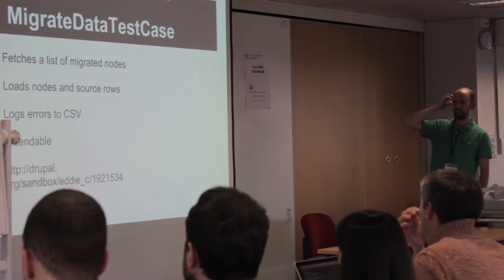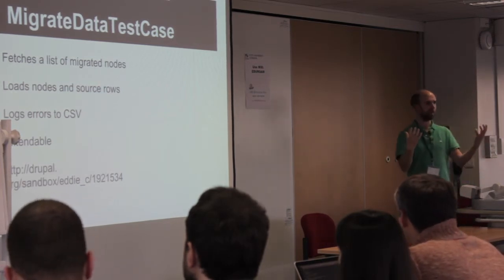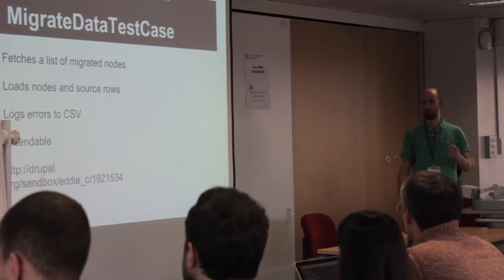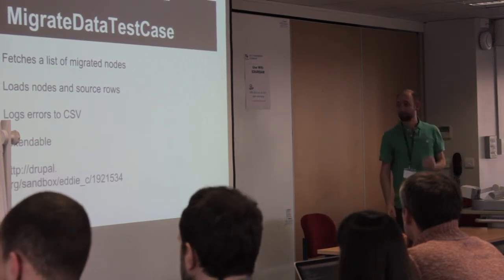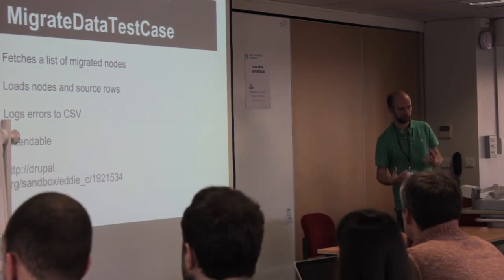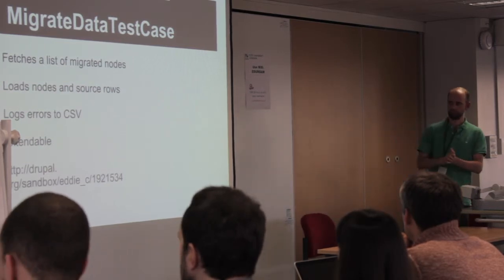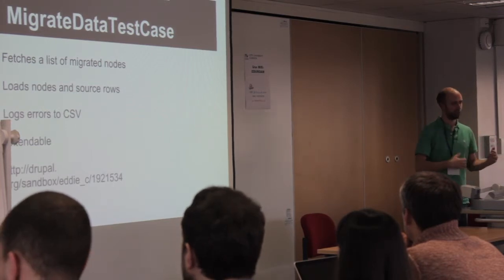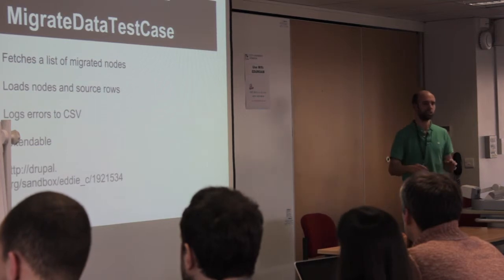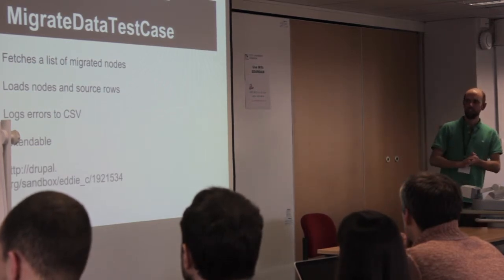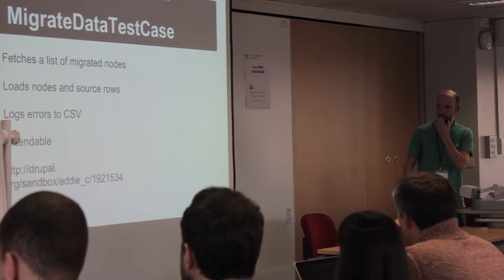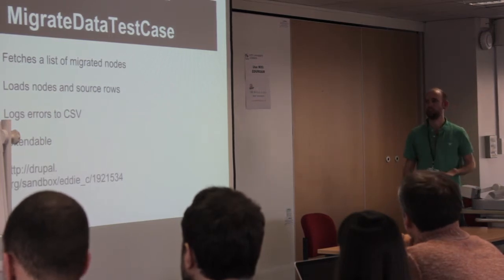The MigrateDataTestCase handles that for you and gives you two arrays you can then compare. Logging errors was quite important because we were handing Migrate classes over to clients who were running them themselves and then wanted to fix any data that hadn't migrated properly. They wanted a nice report so that when overnight migrations were running, they could wake up in the morning, look at a spreadsheet, and say: I need to fix this, this, and this — because this person's author name was spelt wrong, or this email address is malformed. And it's extendable, as I'll show you in a minute.